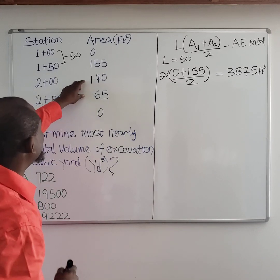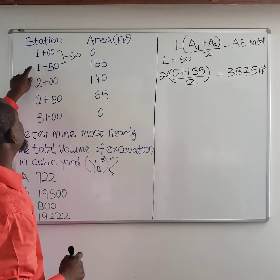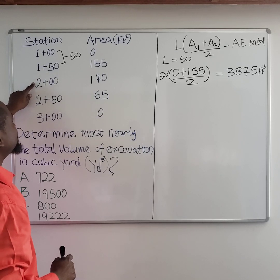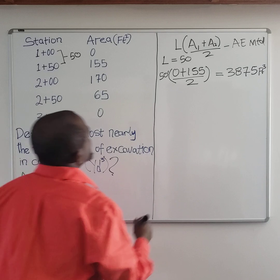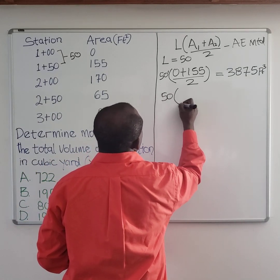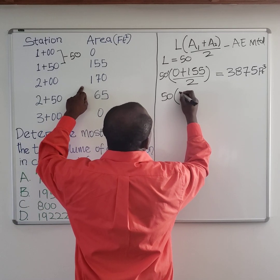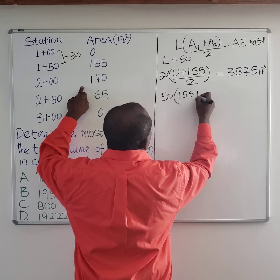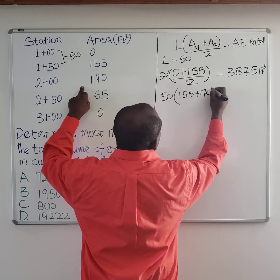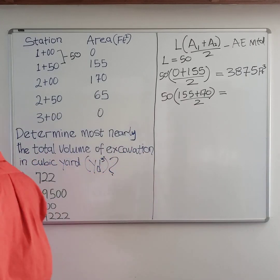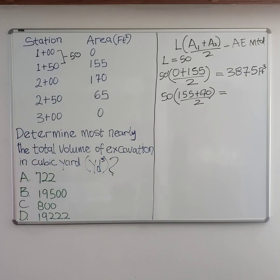You do the same thing for the next station pair — station 2 and station 3. That gives you 50 multiplied by (155 plus 173) divided by 2. The answer is going to be 8,125 feet cubed.